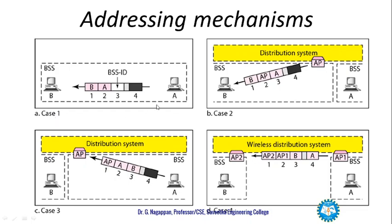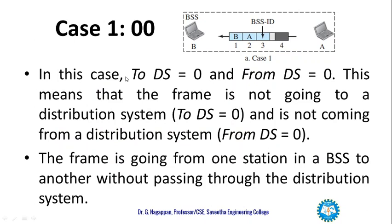Let us try to understand the explanation with examples. Case 1: consider stations A and B. When a frame moves from A to B, ToDS is 0 and FromDS is also 0.